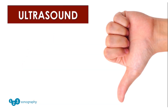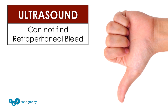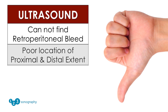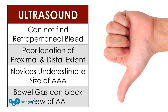The limitations of ultrasound are that it has poor ability for detecting retroperitoneal bleeding, is inferior to CT for judging the proximal and distal extent of the aneurysm, creates a tendency for novice sonographers to underestimate the aortic diameter, and bowel gas can block the view in some patients.